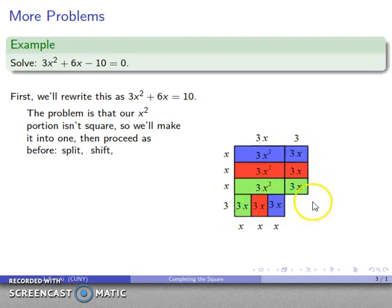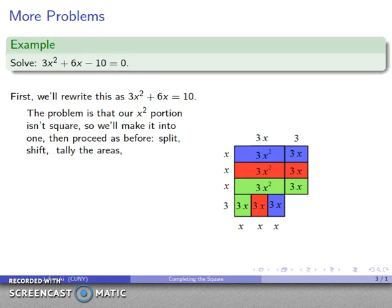Now I have a partial square that's 3x + 3 by 3x + 3, and I'm just missing this little piece here to make it into a perfect square. Let's figure out what our areas are so far.